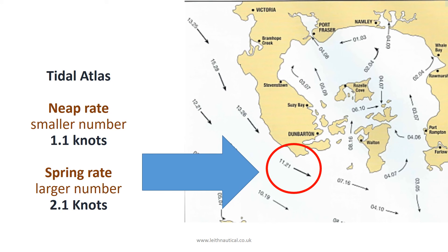The tidal atlas gives us a visual overview of the set and rate of the tidal streams in the area in which we are sailing. The arrow gives us the set or direction of the tidal stream, and the numbers give us the rate of the tidal streams. In the example here, the neap rate is 1.5.